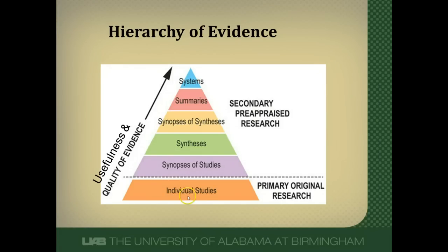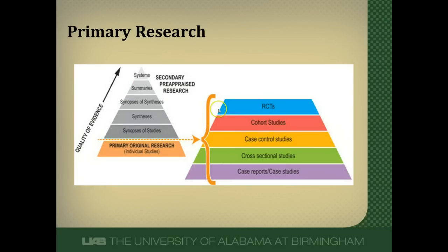I want to focus now more on the individual studies of the primary original research. It's really important to understand this hierarchy because each of these study designs is prone to very different biases than the other study designs, and some of those biases affect study outcomes much more than others. I'm going to start at the bottom and work upward in this hierarchy because there are more biases at the bottom, hence why they're at the bottom, than in randomized controlled trials.